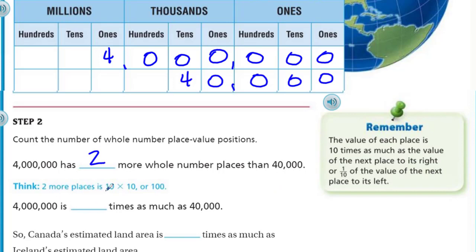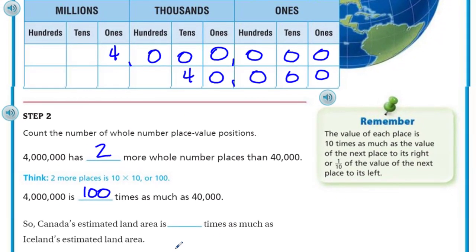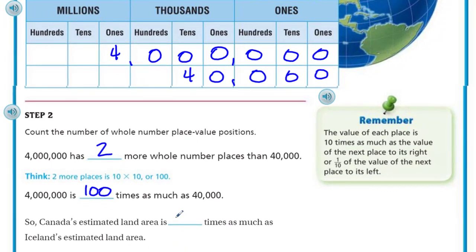Count the number of whole number place value positions. Four million has two more whole number places than forty thousand — we don't have any in the hundred thousands place nor the millions. Two more places is ten times ten, or one hundred. So four million is one hundred times as much as forty thousand. Canada's estimated land area is one hundred times as much as Iceland's.